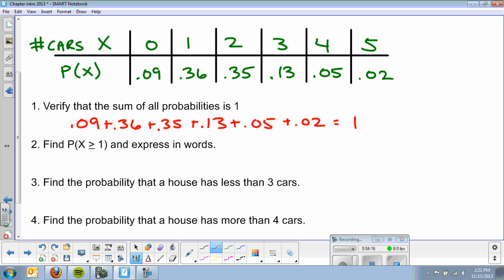Okay. Find the probability that X is greater than or equal to one and express in words. So, one thing that makes this chapter a little tricky is you're going to start to get into these inequality symbols again. And that's something that we may need some practice with. So, X is greater than or equal to one. So, it's one and everything greater.